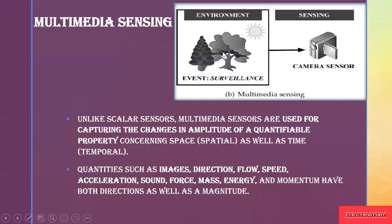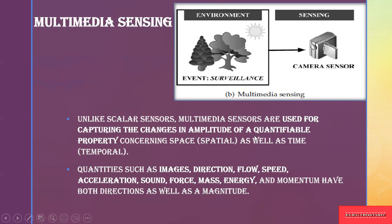Next is multimedia sensing. Here you have an environment with trees and plants, and surveillance is done by a camera, so the camera acts as a sensor monitoring the entire environment. In scalar sensing we measured the amplitude of scalar quantities, but in multimedia sensing we capture the changes in amplitude. Quantities like image, direction, flow, speed, acceleration, and sound can be measured by multimedia sensing — both direction and magnitude around the environment.